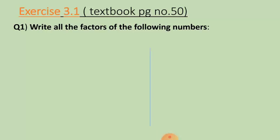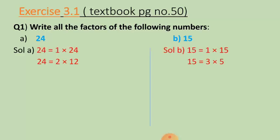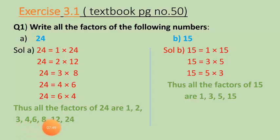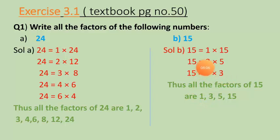Now let's come to the exercise question from textbook page number fifty. From exercise 3.1, we need to write all the factors of the given numbers. The first number is twenty-four and the second is fifteen. By finding all possible pairs, the factors of twenty-four are one, two, three, four, six, eight, twelve, and twenty-four — remember that repeated numbers are counted only once. The factors of fifteen are one, three, five, and fifteen.